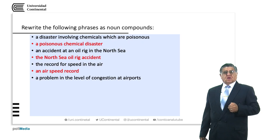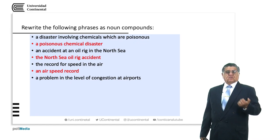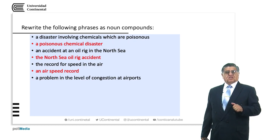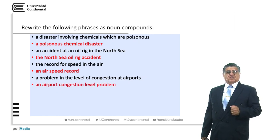A problem in the level of congestion at airports — we are talking about the problem, which is about congestion at airports, at the level of congestion at airports. Our noun compound is going to be 'an airport congestion level problem'. Notice: we have four words referring to one thing — about airports being congested.